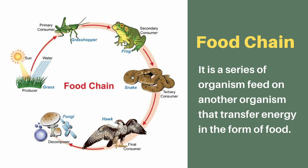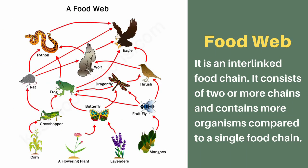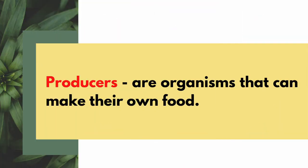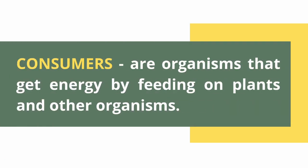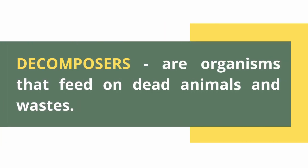Food chain: it is a series of organisms that feed on one another, transferring energy in the form of food. Food web: it is an interlinked food chain consisting of two or more chains and contains more organisms compared to a single food chain. In this feeding relationship, organisms can be producers, consumers, or decomposers. Producers are organisms that can make their own food. Consumers are organisms that get energy from feeding on plants and other organisms. Decomposers are organisms that feed on dead animals and waste.